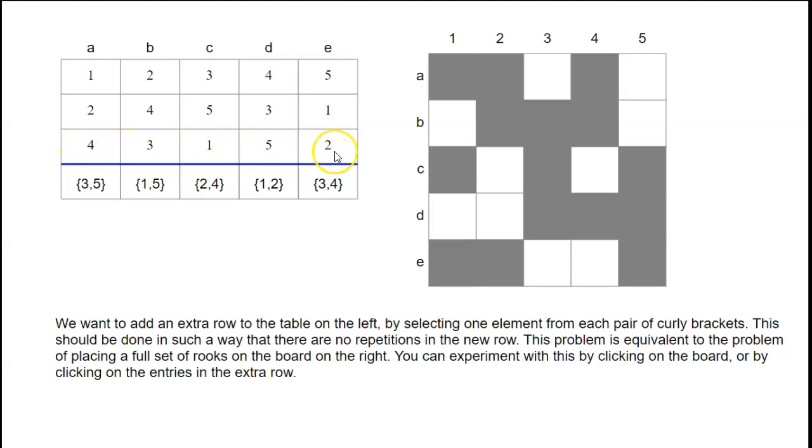In any row, there's no number repeated, but also in every column, no number is repeated. Here 1, 3, 5, here 4, 3, 5, here 1, 2, 5, no number is repeated in any column.